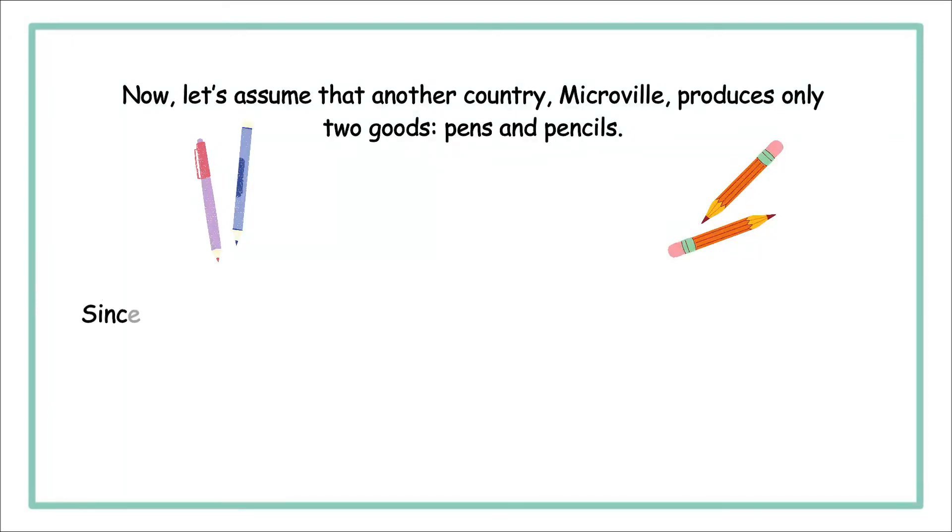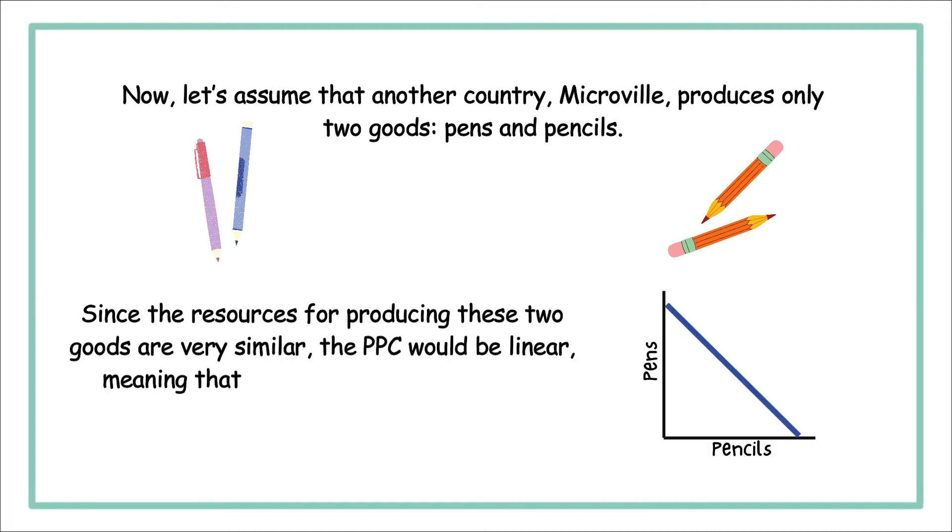Since the resources for producing these two goods are very similar, the PPC would be linear, meaning that as they produce more pens, they give up constant amounts of pencils.